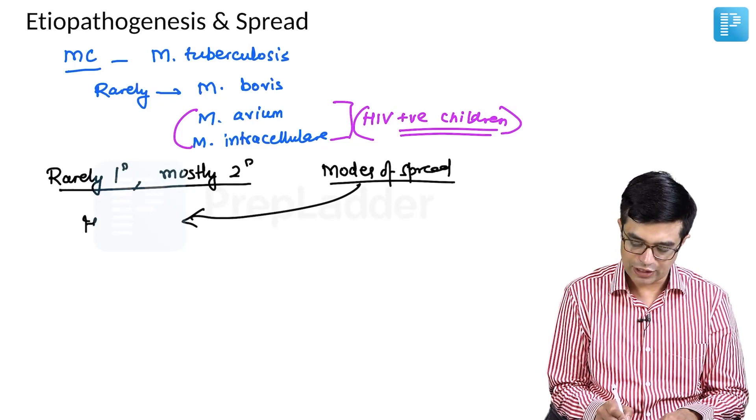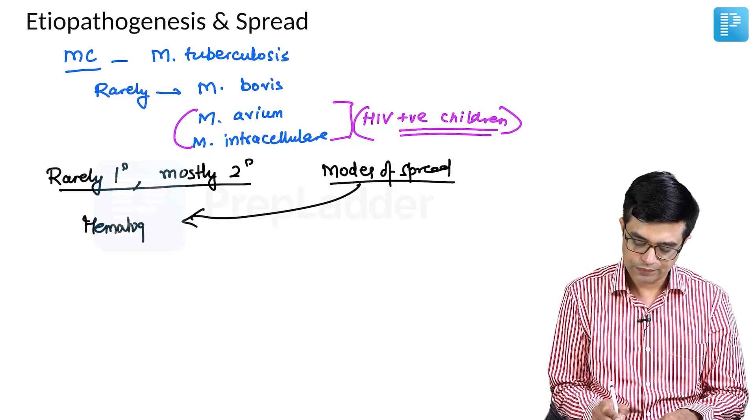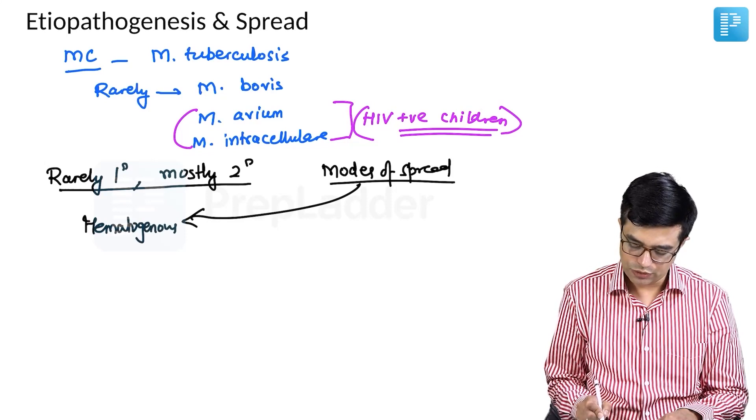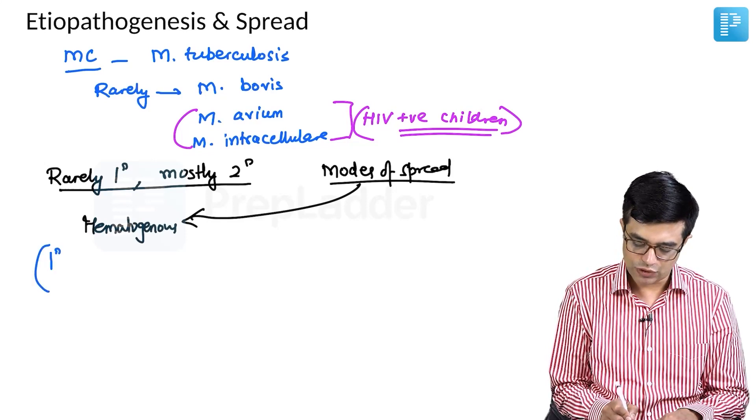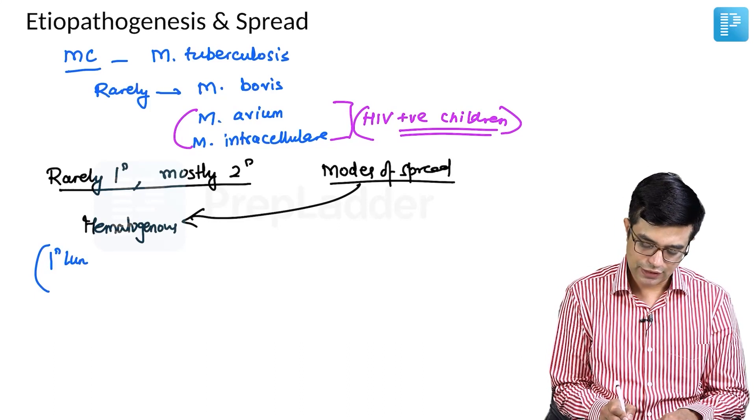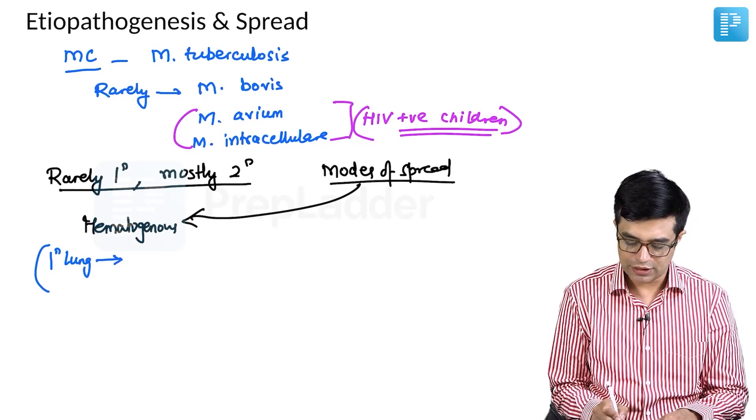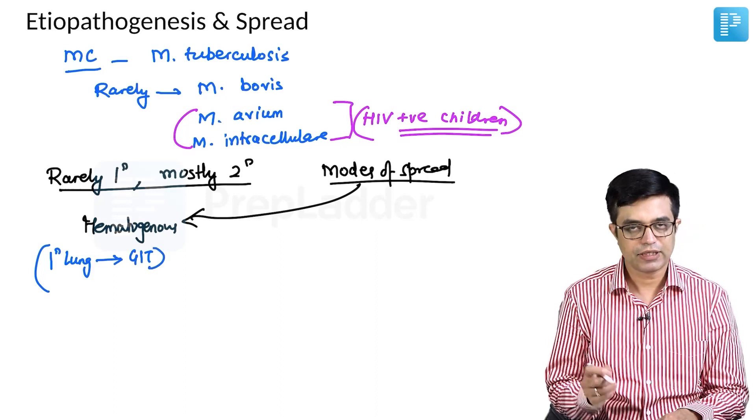Commonly, it can occur through hematogenous route. In hematogenous route, there will be a primary focus in the lungs. From there, it will spread via blood to the GIT. This is one route.